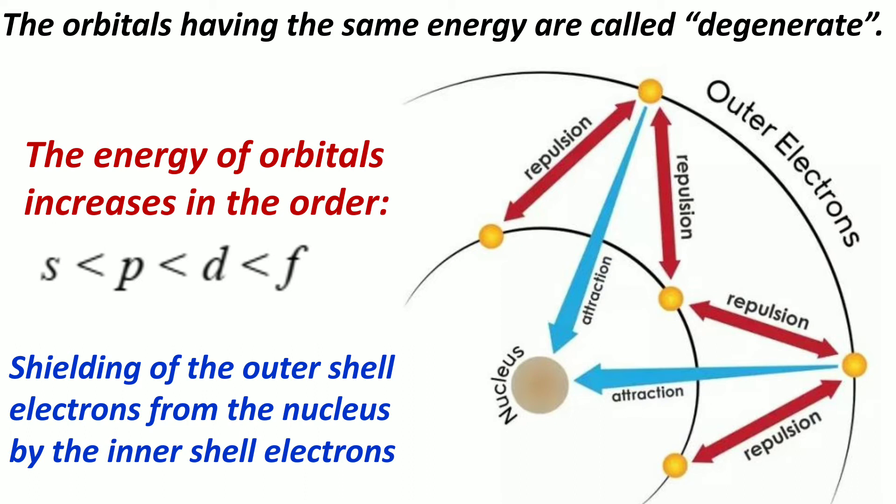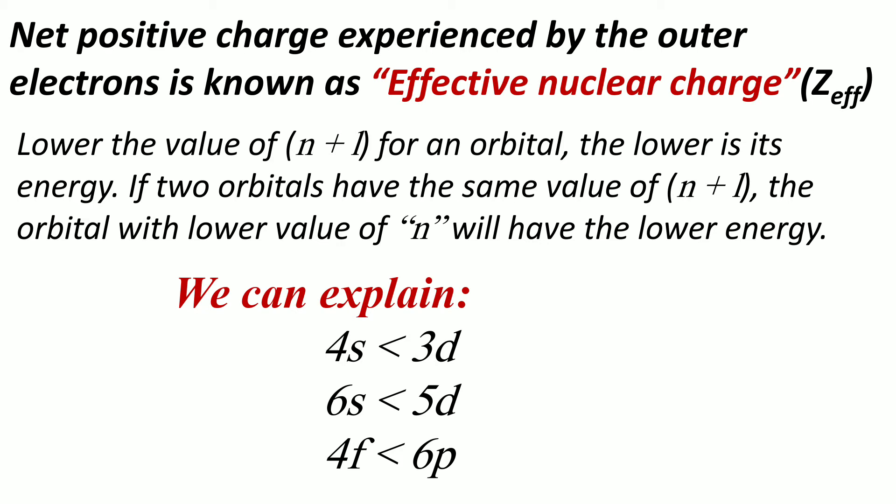The energy of orbitals increases — f orbital energy is more than d orbital, d orbital energy is more than p orbital, and p orbital energy is more than s orbital. This is due to shielding of outer shell electrons from the nucleus by the inner electrons. The inner electrons reduce the effective nuclear charge experienced by the outer shell electrons. The net positive charge experienced by the outer shell electrons is known as the effective nuclear charge, denoted Z-eff.